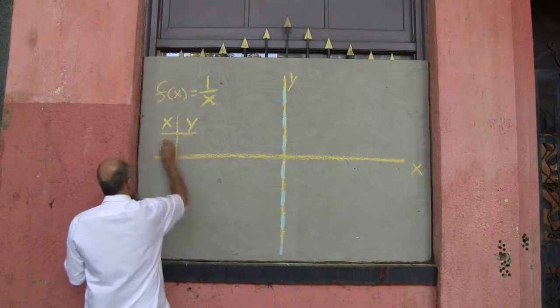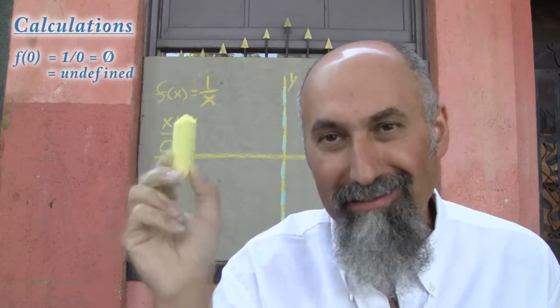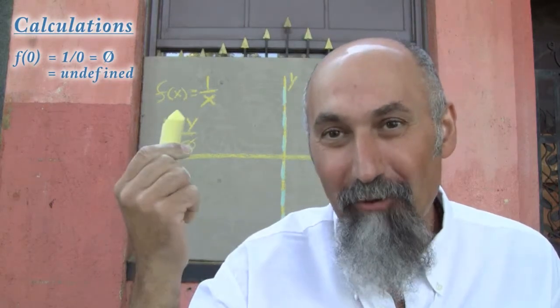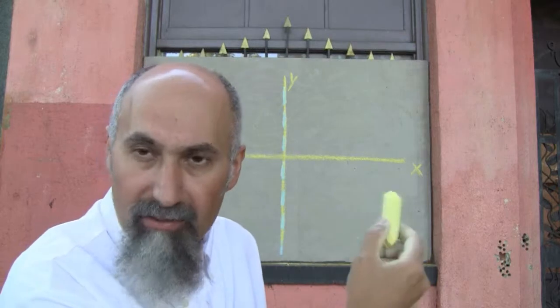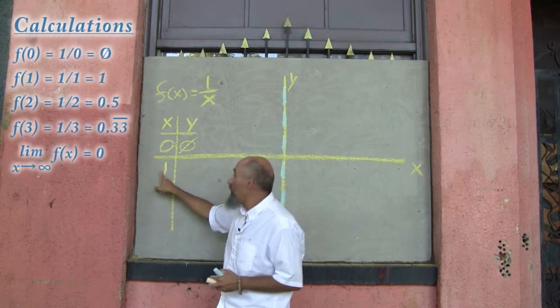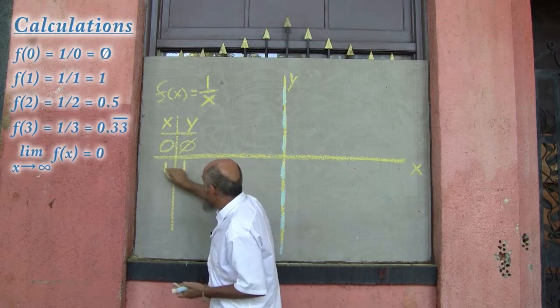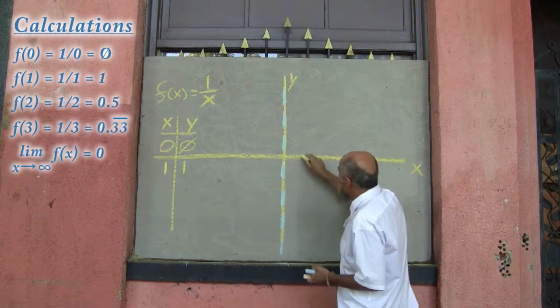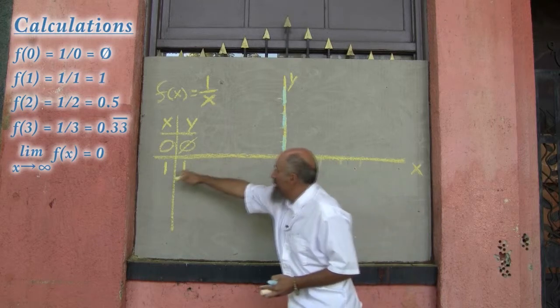We're going to create a table of values for this function. When x is equal to 0, f(x) is undefined — that's our asymptote. Now let's look at the positive side. When x is 1, that's 1 over 1, so f(1) = 1, and y becomes 1. If we graph it, that point is 1 unit over and 1 unit up.